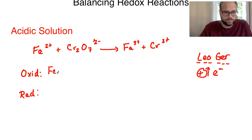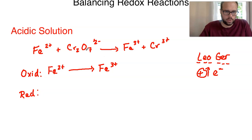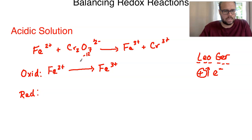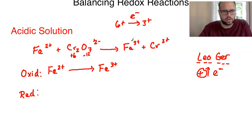Because iron is going from two plus to three plus, it's increasing its charge — essentially you're seeing three plus over two plus — so it's lost an electron. That would be the oxidation portion: iron two plus goes to iron three plus. Now looking at the chromium, oxygen is going to be two minus a piece, so two minus times seven would be 14 minus. Two of that minus is accounted for in the charge, leaving 12 minus for the oxygen, which means the two chromiums have to be plus six each. Chromium then goes to three plus.